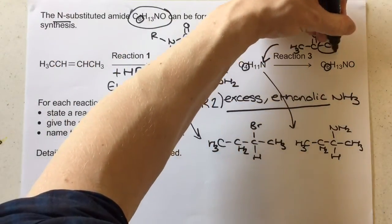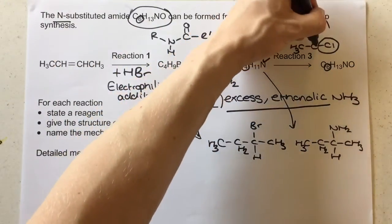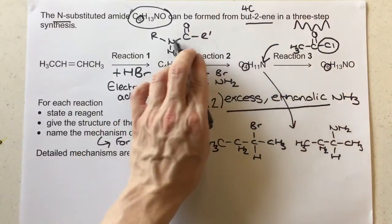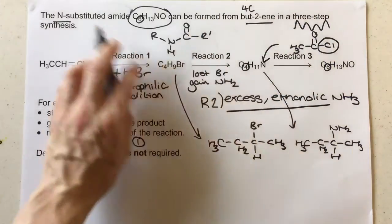Now, what's going to happen then is, this Cl gets pushed off, and that's where the nitrogen makes the connection to the carbon just here, for this N-substituted amide that we identified from the question at the start.